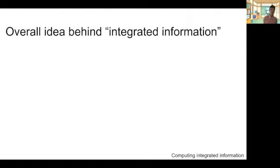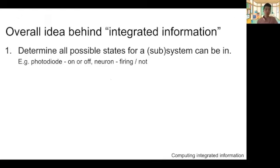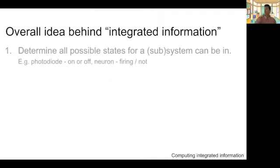The overall idea behind computing integrated information: this quantity itself has nothing to do with consciousness — it's similar to any network property you can find in a textbook. The first procedure is to determine all possible states the subsystems can be in. For example, a photodiode has two states: on or off. One neuron can also be considered as either firing or not. But if we distinguish different modes of firing or different membrane potentials, then there can be many more states. The next step is to determine how much of its future or past states are constrained by its current state — this is called intrinsic information.